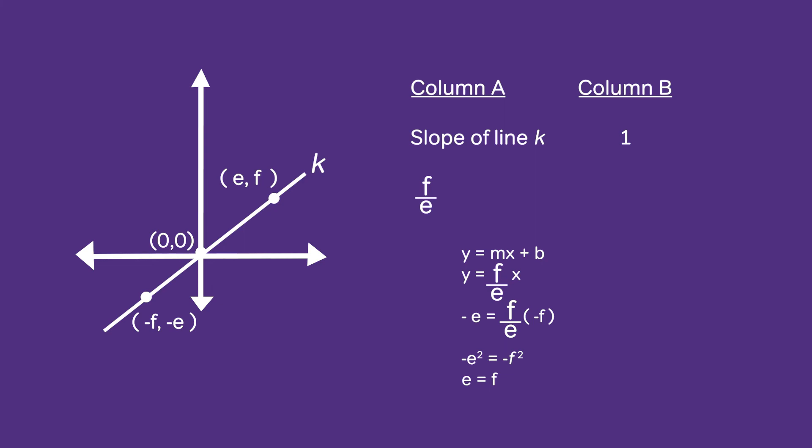Now if e equals f we can go to column A here and replace e with f. From here we see that f over f must equal 1, in which case column A is equal to column B.